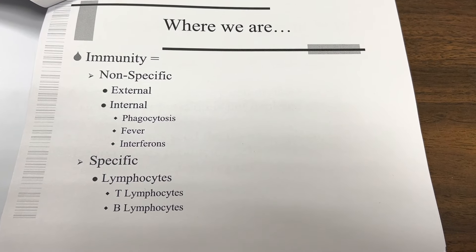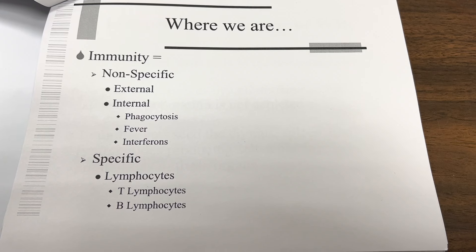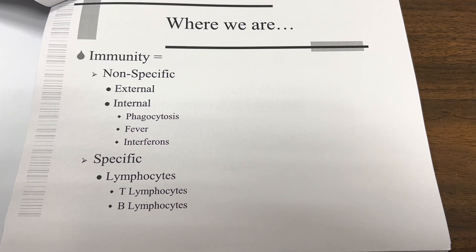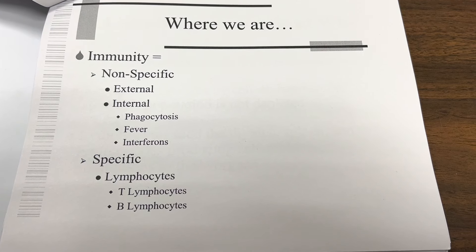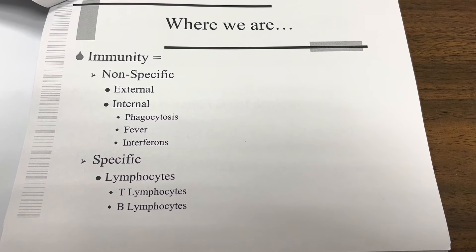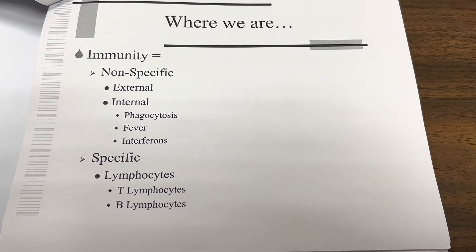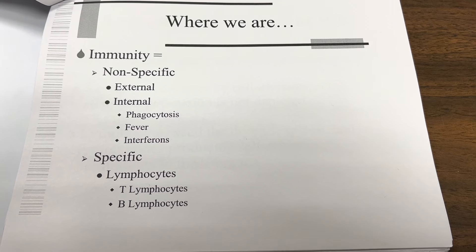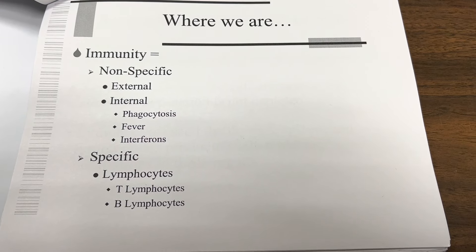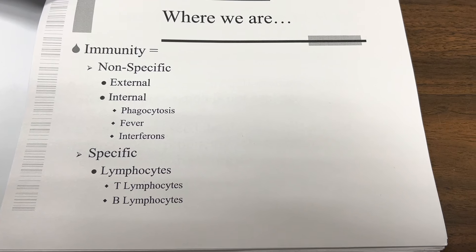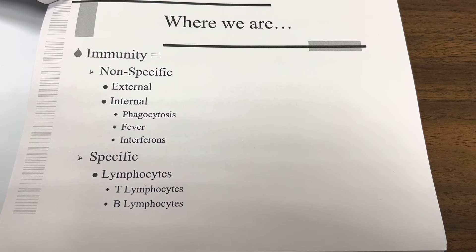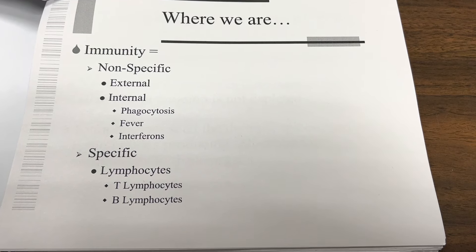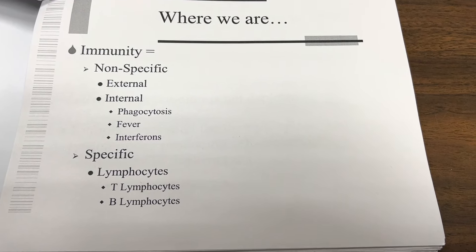Nonspecific immunity has external and internal components. Internal nonspecific immunity includes phagocytosis, fever, and interneurons. Specific immunity involves lymphocytes — T lymphocytes and B lymphocytes.